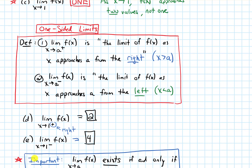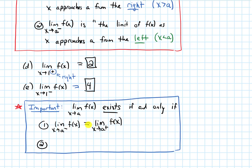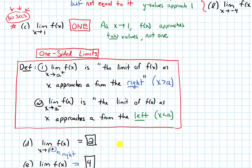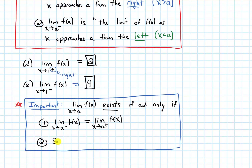Now we can state an important fact about one-sided limits. For an overall limit as x approaches a to exist, it happens if and only if the limit from the left equals the limit from the right. If they weren't the same, we'd have situations like Part C where the function was approaching two different numbers. Additionally, both one-sided limits need to be finite for the overall limit to exist.